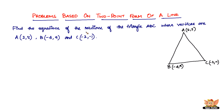We need to find the equations of the medians of the triangle. The median of a triangle is the line that joins one of the vertices to the opposite side's midpoint. This goes and joins this midpoint, and then this comes and joins this. Point C comes and joins this midpoint, and from here it goes to this midpoint. Let's name them AD, BE, and CF.